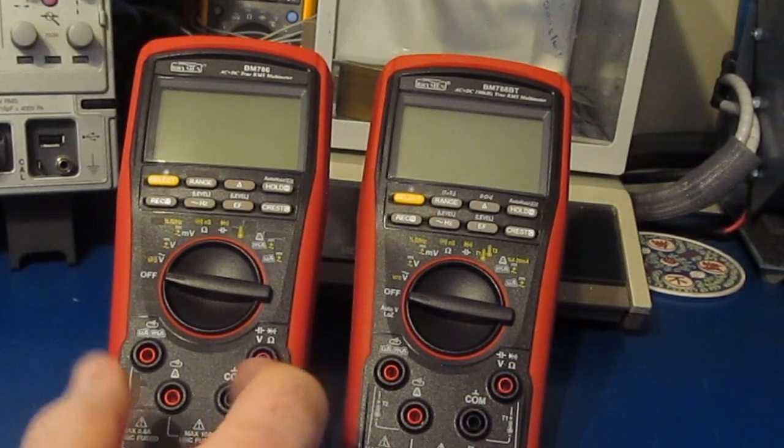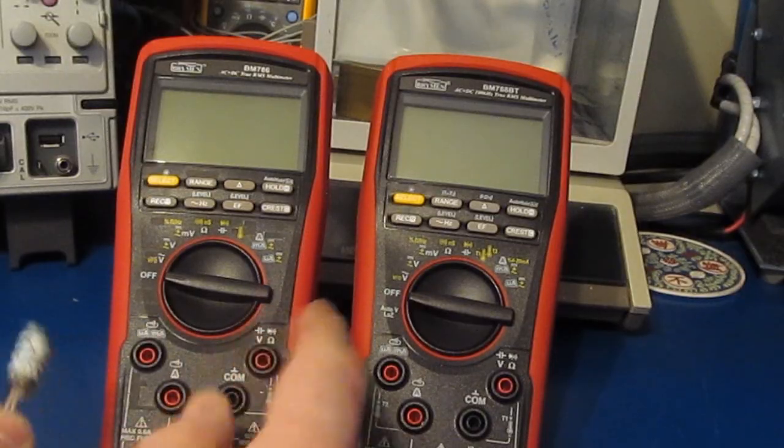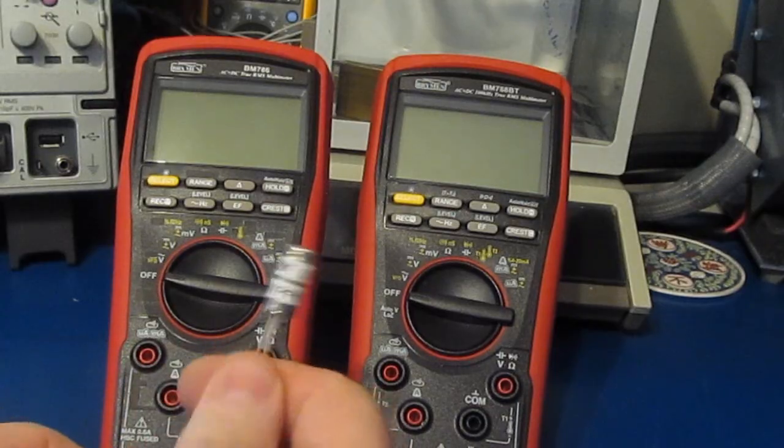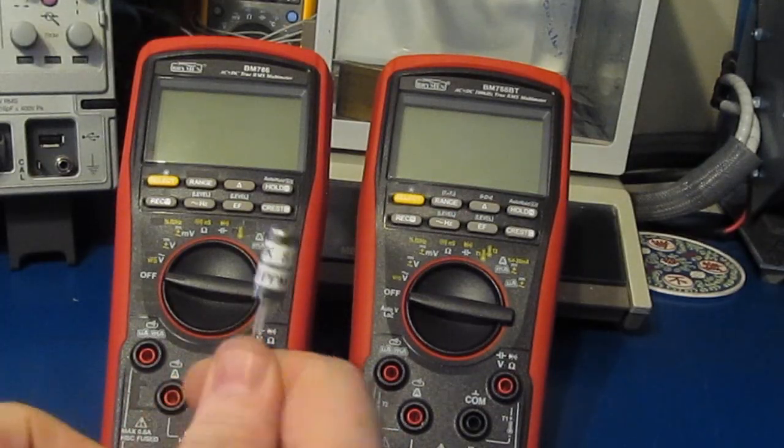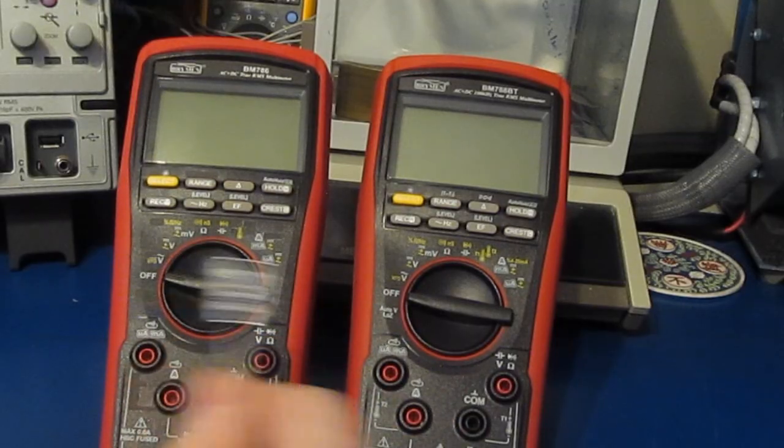He ran into a problem during his testing where he was measuring a 1k resistor, similar to what I was doing. What would happen is the phone was recording a value of 10 times higher than the actual resistor value. It's a very bizarre problem. I'll give you the link if you want to have a look at the data that he's posted.